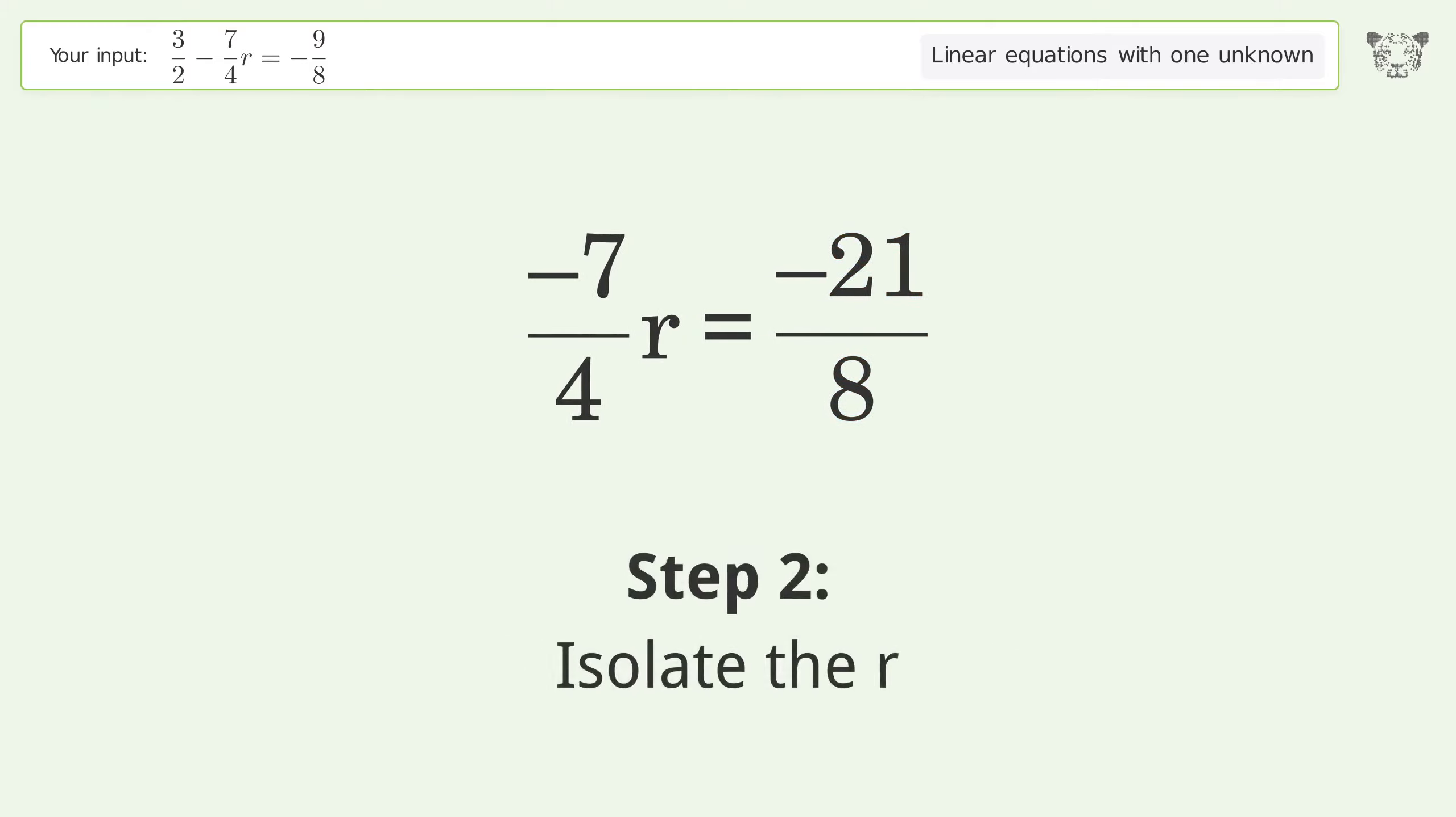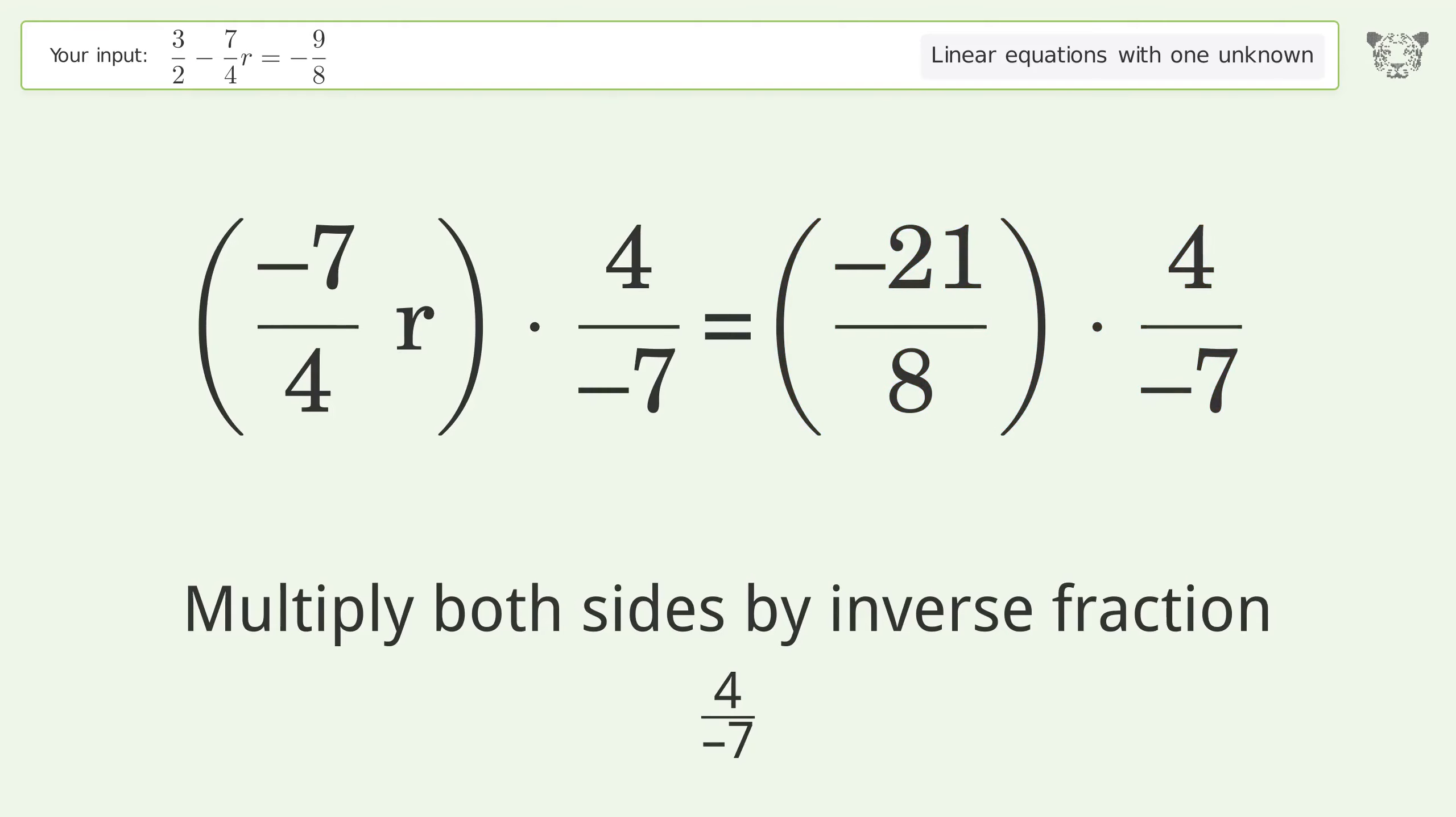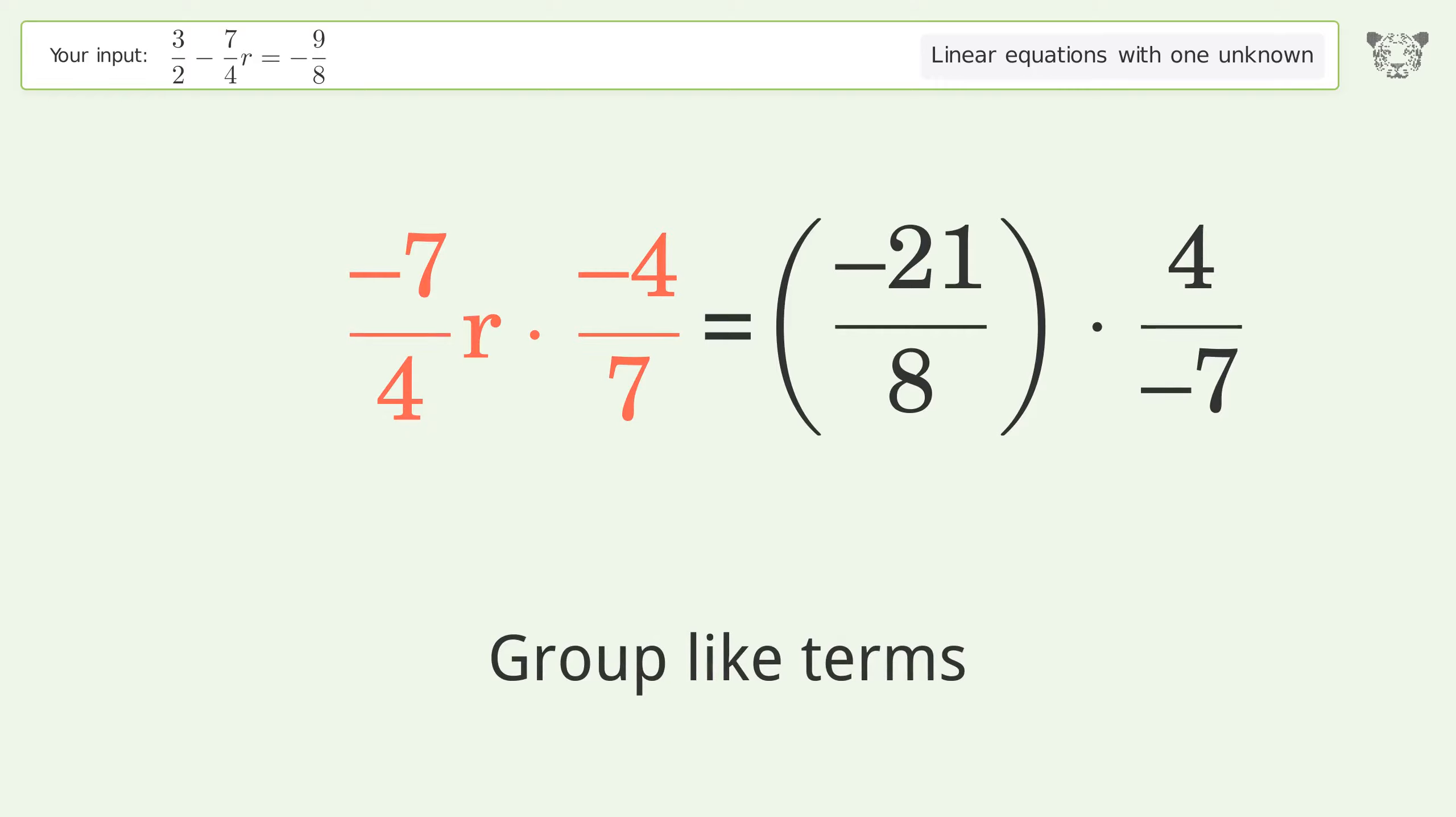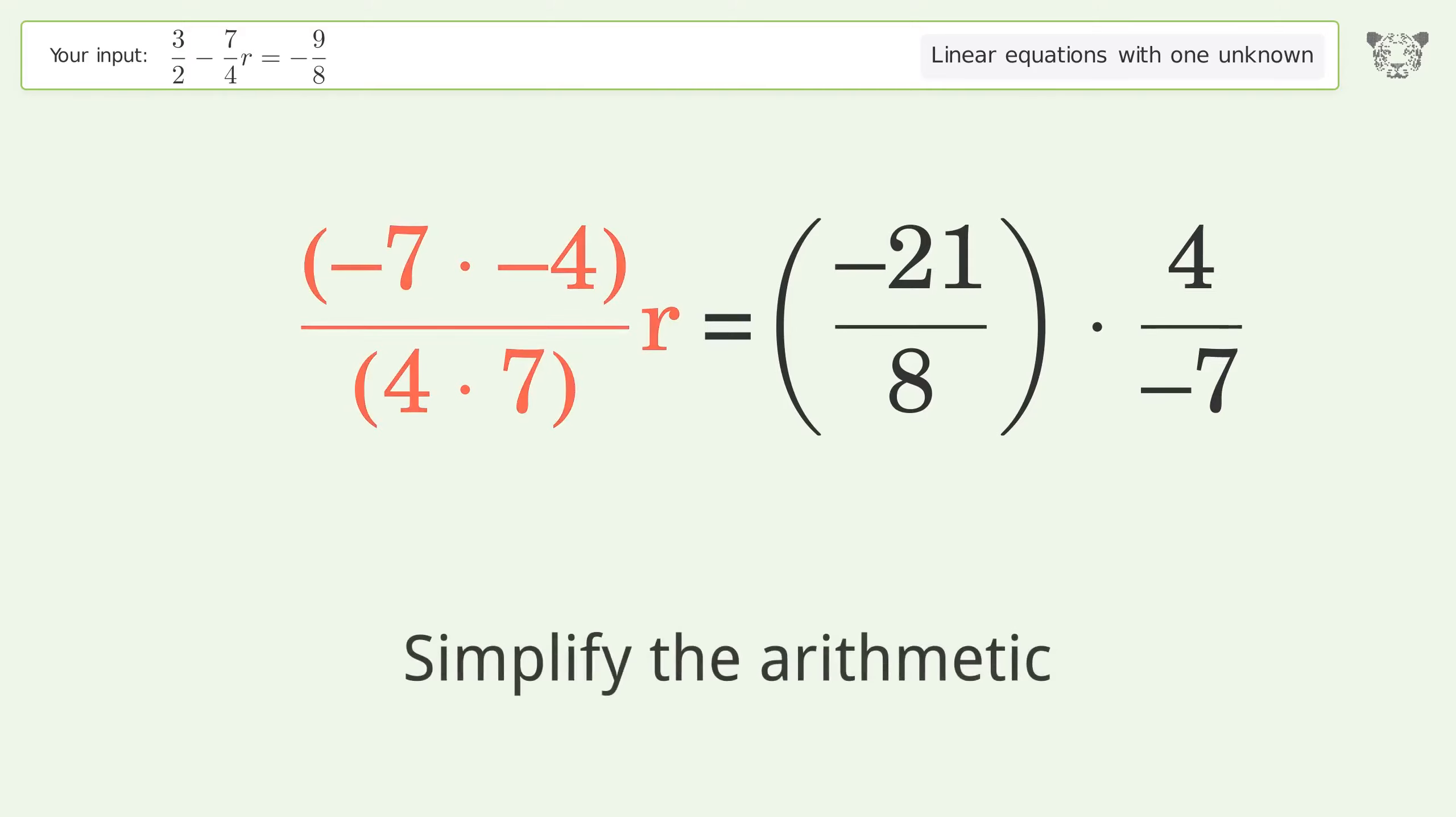Isolate the r. Multiply both sides by the inverse fraction, 4 over negative 7. Move the negative sign from the denominator to the numerator. Group like terms. Multiply the coefficients. Simplify the arithmetic.